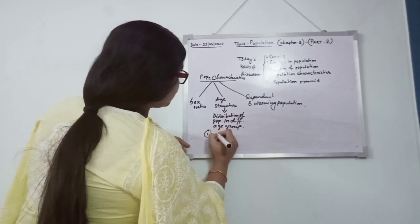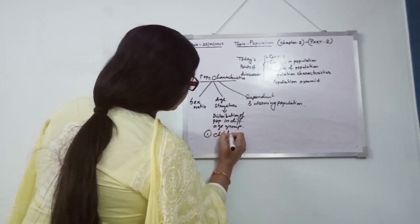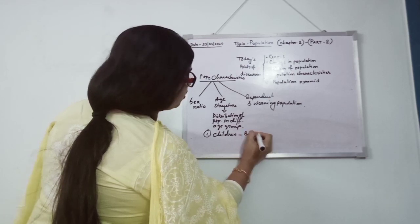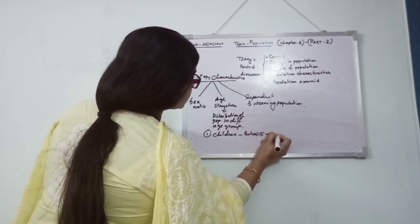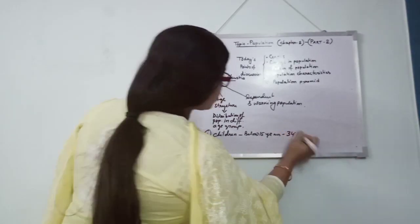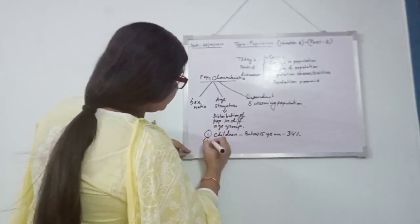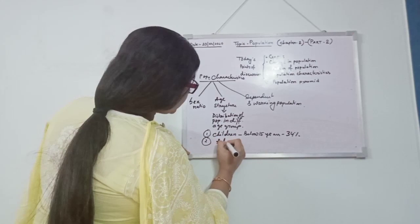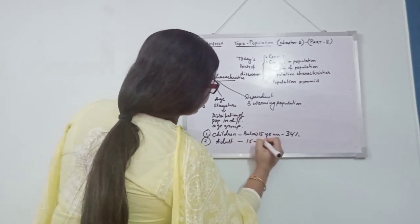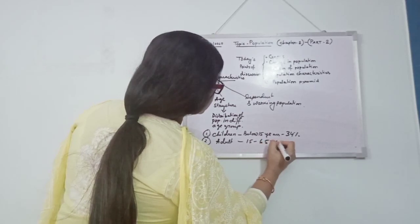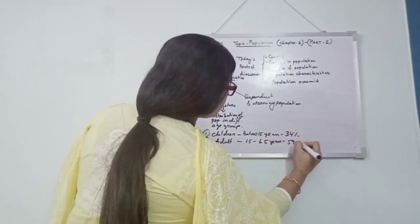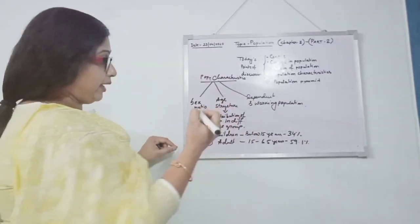First is children, who are having the age below 15 years, and their proportion is 34% of total population. Number 2, the adult group or the middle group. They are the age group 15 to 65 years. They are maximum, 59.1% of total population.